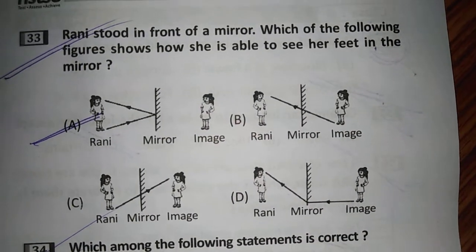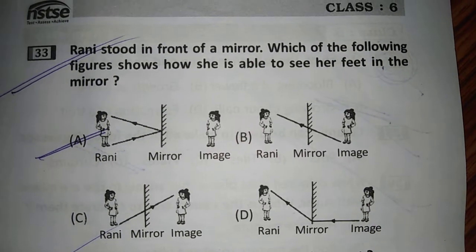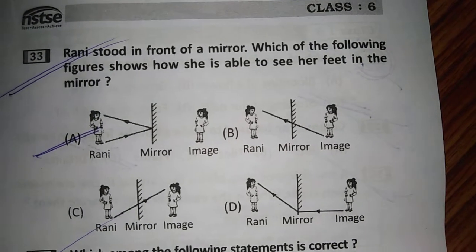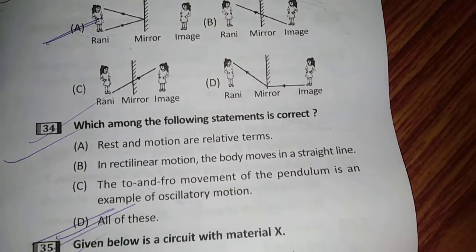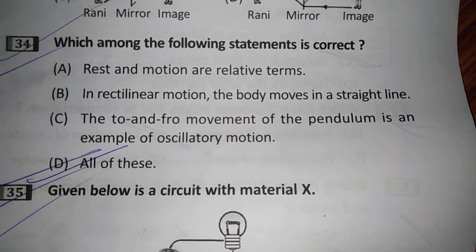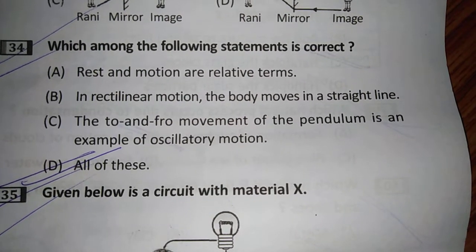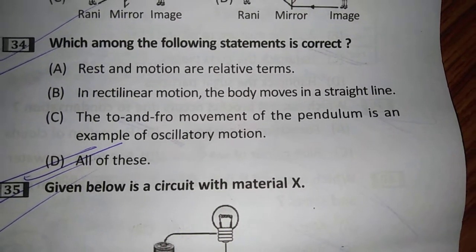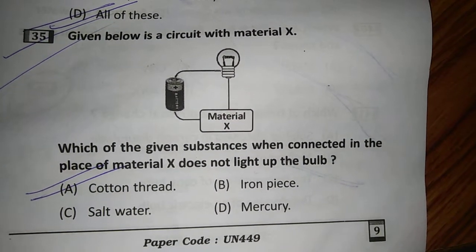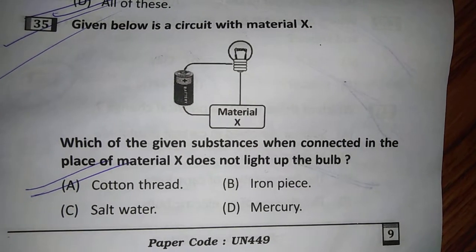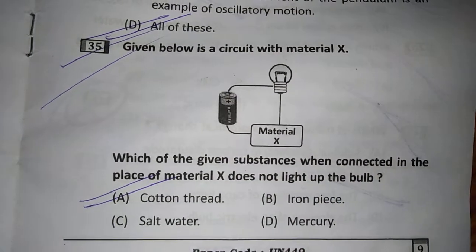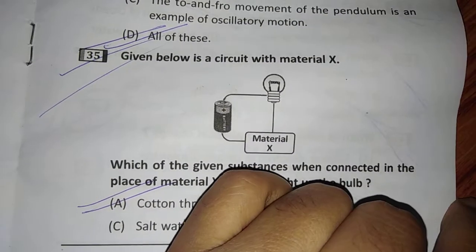Here is question number 33, from the chapter on light. Now question number 34 is shown. Question number 35 is again a question from electricity.